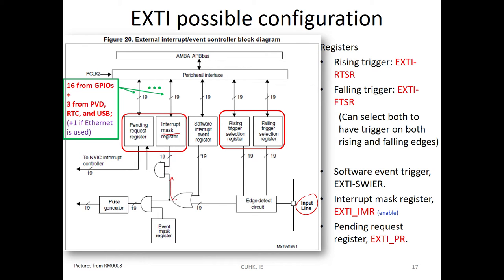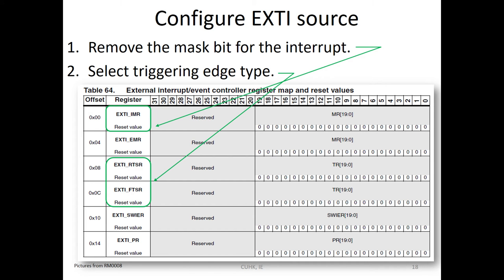If the mask is okay, then we go to here, then arise the pending register. Means that it is pending. After pending set the register, then we go to NVIC, the interrupt controller, that will process the interrupt.